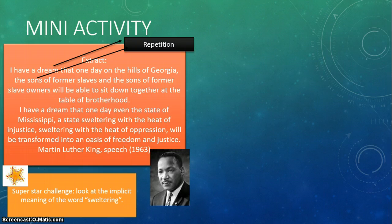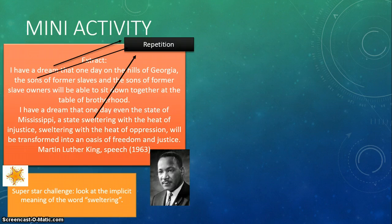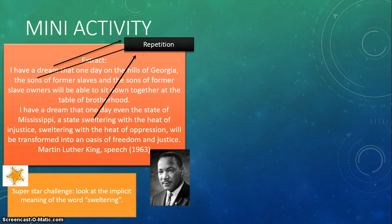He also keeps repeating 'sons of former slaves' and 'sons of former slave owners,' perhaps drawing similarities between the slaves and slave owners. We can also see the word 'sweltering' is repeated several times. We're going to come back to that in a minute, because I've included a superstar challenge for you — I really want you to look at the implicit meaning of the word 'sweltering' and that word choice.